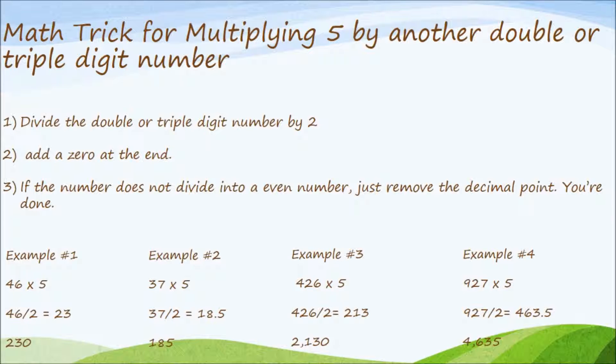First, divide the double or triple digit number by 2. Next, add a 0 at the end. And finally, if the number does not divide into an even number, just remove the decimal point and you're done.